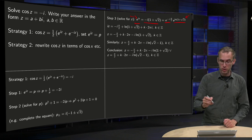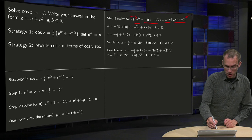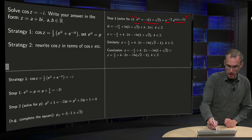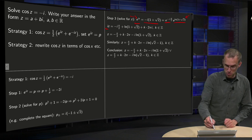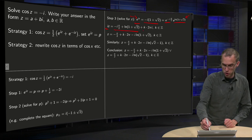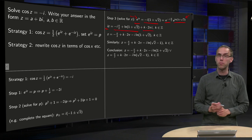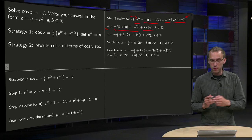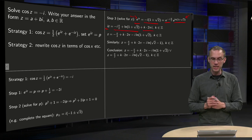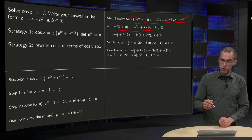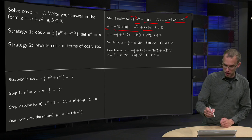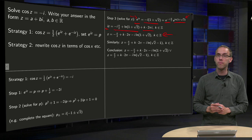Now we have an exponential on both sides. We know e^a equals e^b only if a equals b plus a multiple of 2πi. So: iz equals the exponent on the right plus k·2πi, where k is in ℤ. Dividing by i then gives us z.